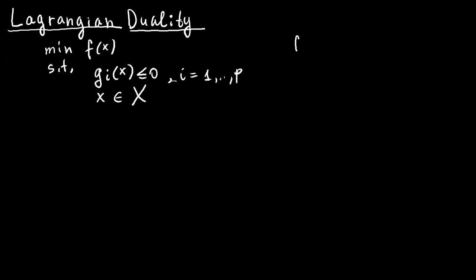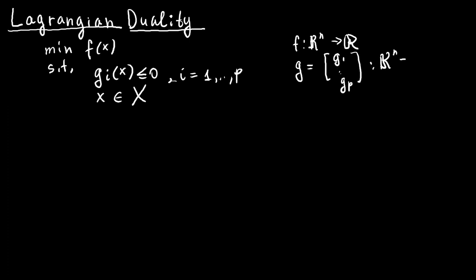Here f is a function from R^n to R, g combining the g_i's is a function from R^n to R^p, and the set X is a subset of R^n. Let's denote this problem by P.